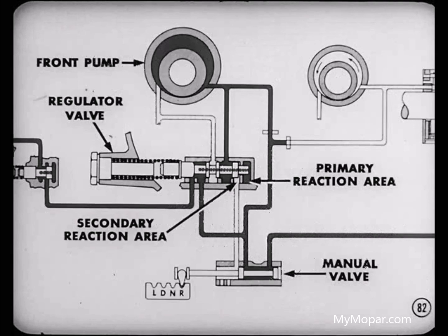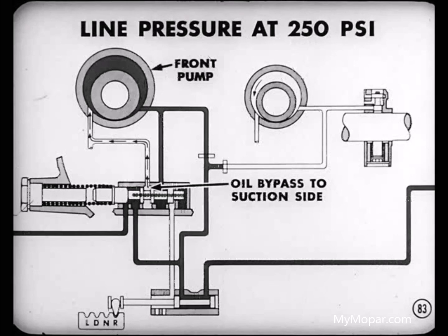When the selector lever is moved to the reverse position, the manual valve moves, closing off oil pressure to the secondary reaction area in the regulator valve. Then there's oil pressure to the primary reaction area only. Wouldn't that cause pressure to build up, Jack? It sure would, Bill. Line pressure builds up to 250 pounds per square inch. When it reaches this pressure, the regulator valve bypasses the excess oil to the suction side of the front pump.